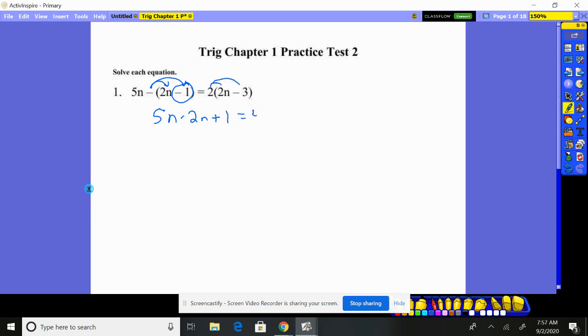Now distribute through here, 4n minus 6. Put together like terms before you move anybody. Now, again, at this point you can move all variables to one side, all numbers to the other. The order and which way you move them doesn't matter. I just always choose to move the smaller variable. That's just me.